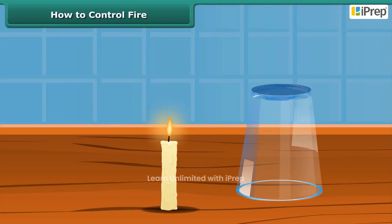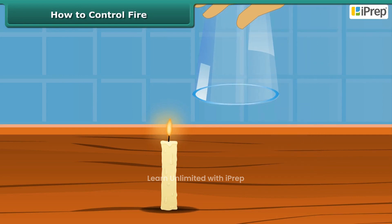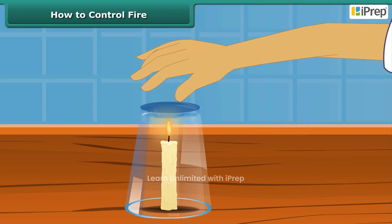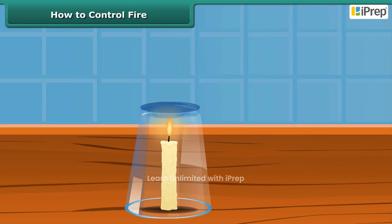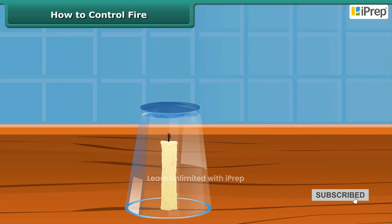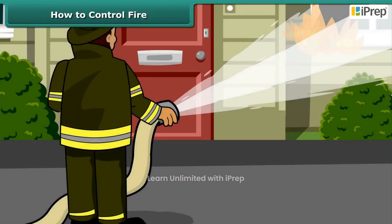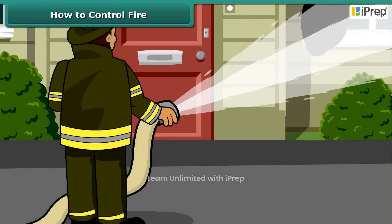Now we will see how fire can be put off. Fire needs oxygen, heat, and fuel to exist. However, it can be extinguished by removing any one of them. You must have seen firemen throwing water on the fire.